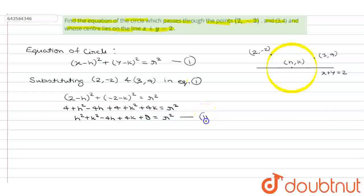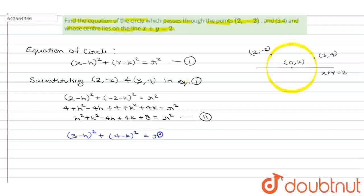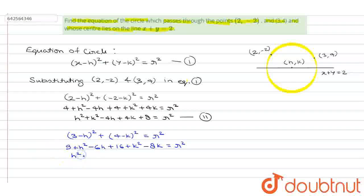Similarly, substituting (3, 4) in the equation of the circle: 3 minus h whole square plus 4 minus k whole square equals r square. Simplifying, we get 9 plus h square minus 6h plus 16 plus k square minus 8k equals r square, which becomes h square plus k square minus 6h minus 8k plus 25 equals r square. Let this be equation number 3.